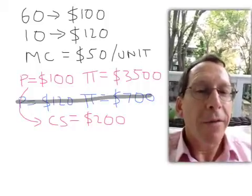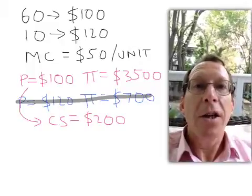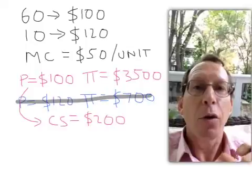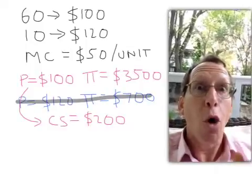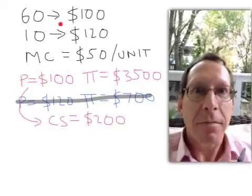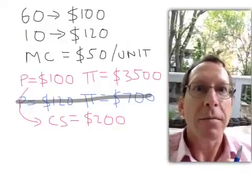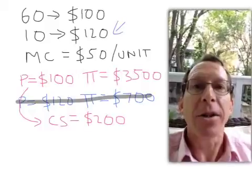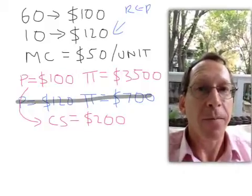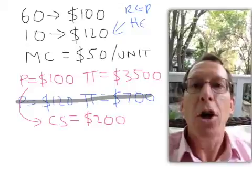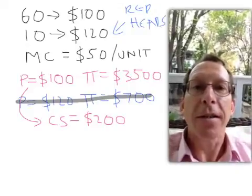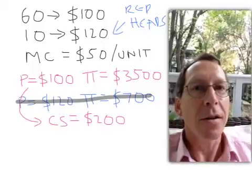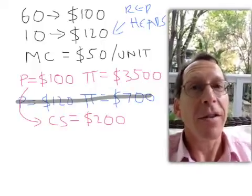Now, what if the monopoly can price discriminate? Suppose all 10 customers who are willing to pay $120 have red hair — they're all gingers — and none of the customers who are only willing to pay $100 have red hair. The monopoly is then able to set two prices: a ginger price of $120 and a non-ginger price of $100.